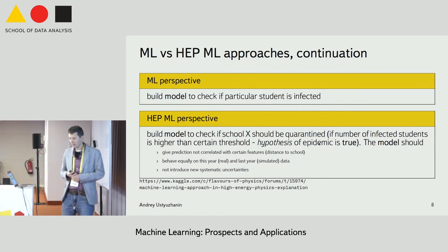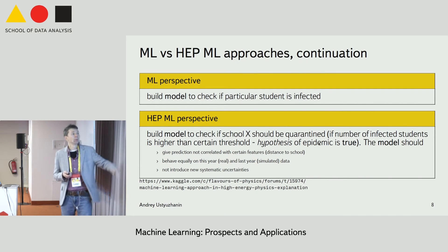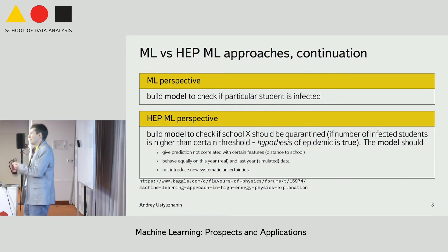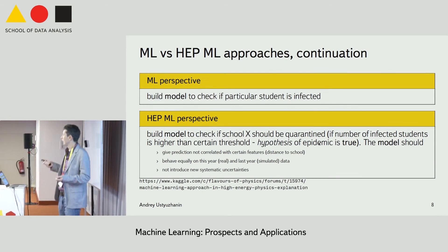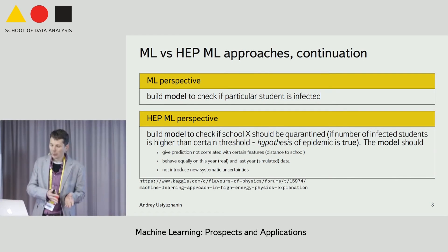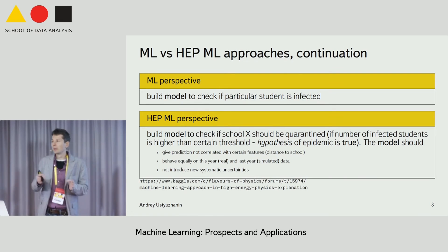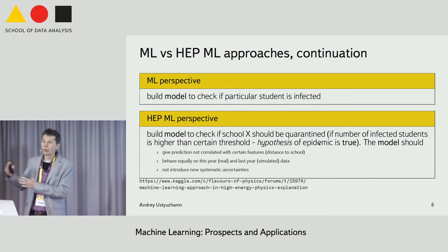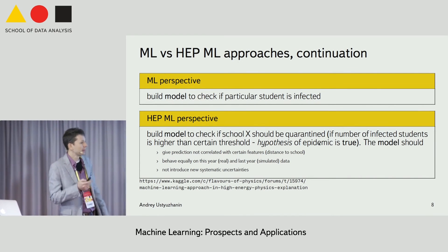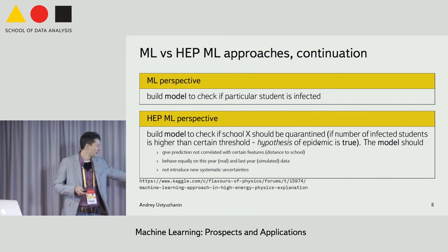In a machine learning perspective, we look at a model that tries to predict whether a particular person is healthy or not. But in high-energy physics, we try to differentiate between hypotheses — one hypothesis that everybody is healthy and you don't need to put the school into quarantine mode, or another hypothesis that there is a certain amount of infected people and you do. The details can be found described in the link below, which is part of the competition running at the moment.